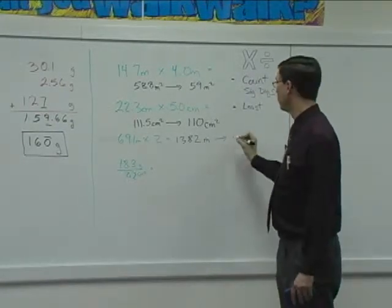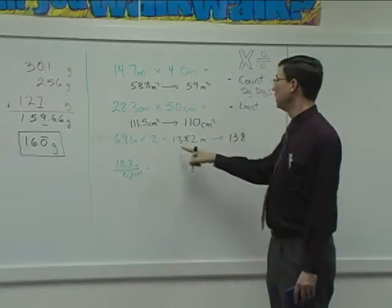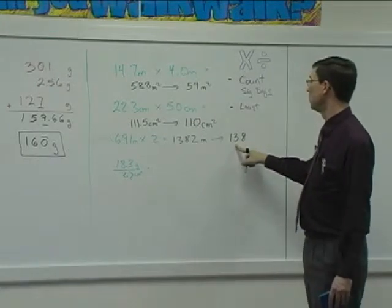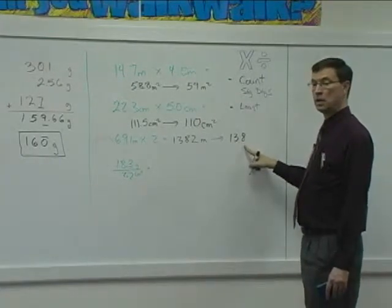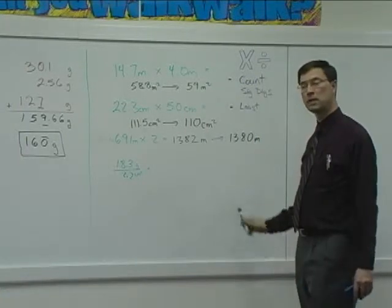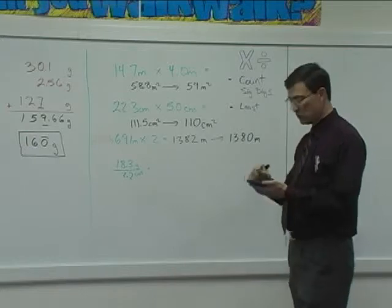One, three, eight. Now this is 1,382. So this is 1,300. Eight, zero. Right. You have to keep the numbers in the same place value. And now let's try this last one.